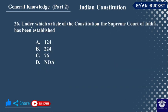Under which article of the Constitution has the Supreme Court of India been established? The Supreme Court is established under Article 124. The 76th Amendment relates to the Attorney General, who has also been established under the Constitution.